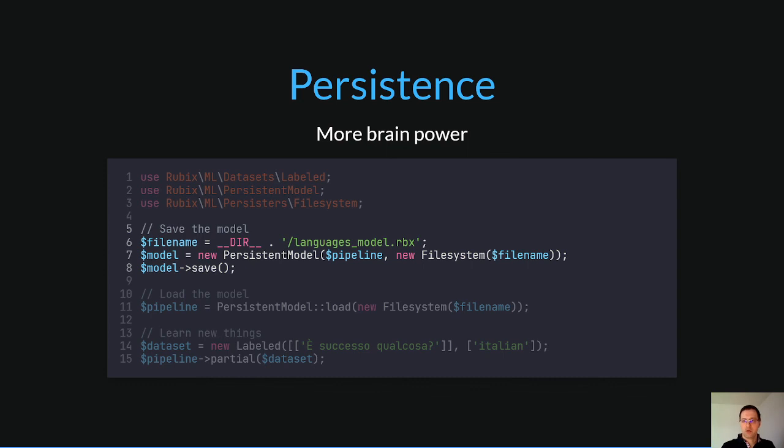To make your model even more powerful from day to day you can store your model into a file. To recreate the model you can use the persistent model load method. To train the model with new samples and labels just create a new labeled dataset and then invoke the partial method. After that you can save the new model again and keep improving it over time.